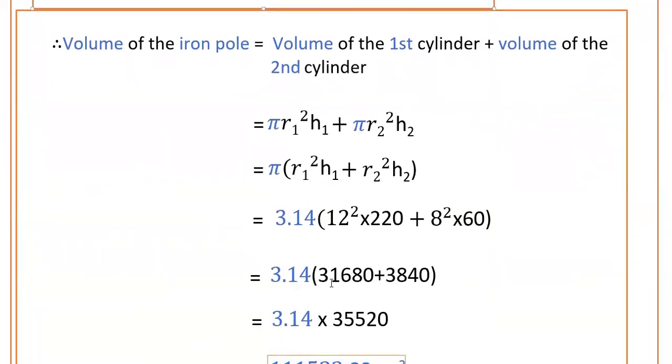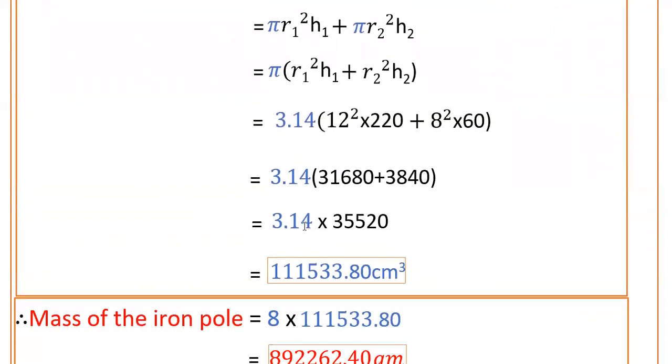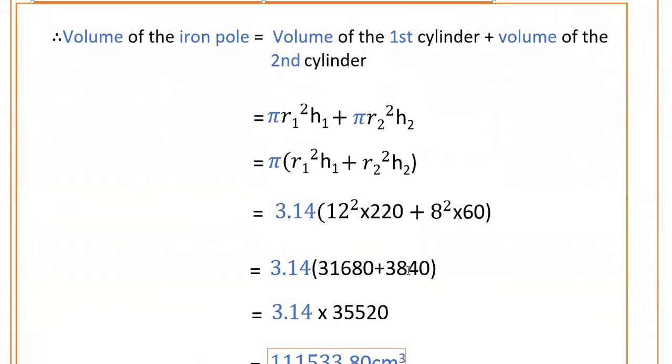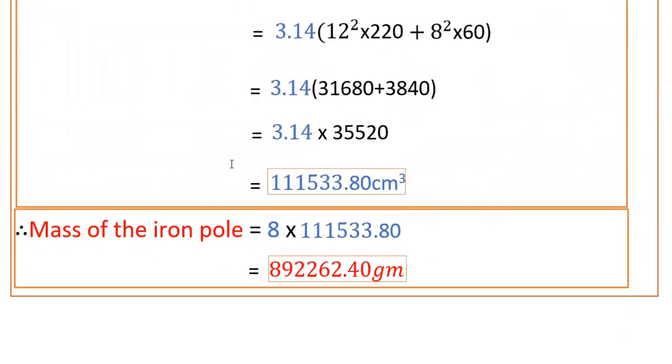Calculate: 3.14 × (31680 + 3840). This value is 3.14 × 35520.